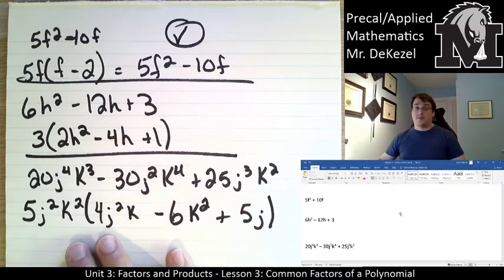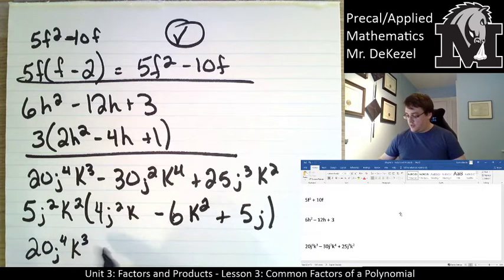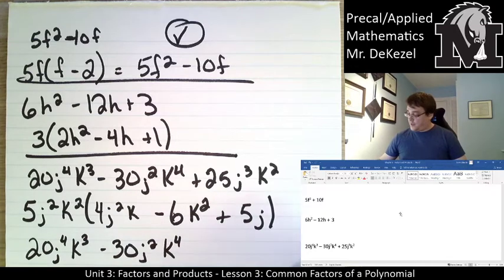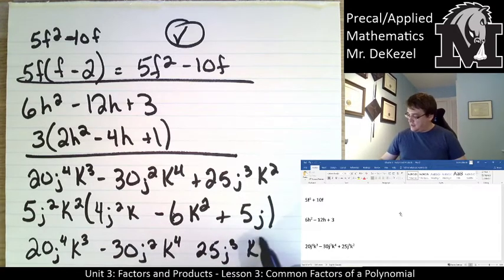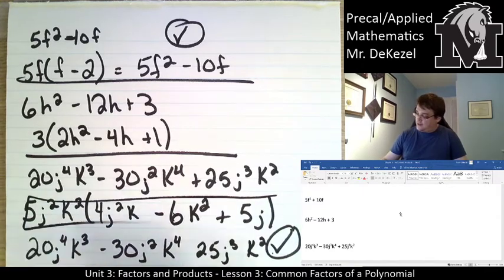Let's verify the check: 5 times 4 is 20, j has 4 total (2 plus 2), k has 3 total (2 plus 1) — that's correct. 5 times minus 6 is minus 30, j has 2, k has 4 (2 plus 2) — correct. 5 times 5 is 25, j has 3 (2 plus 1), k has 2 — correct. So I have factored everything out correctly.